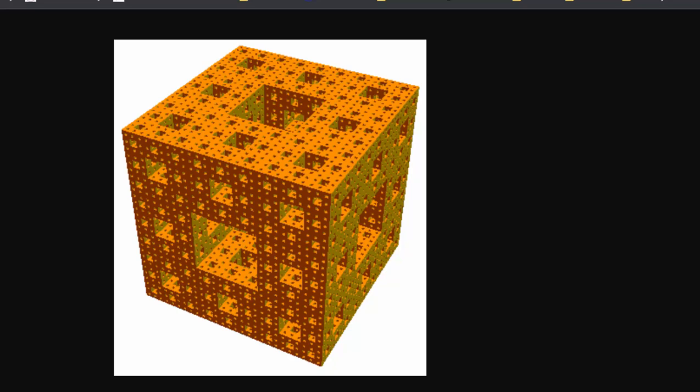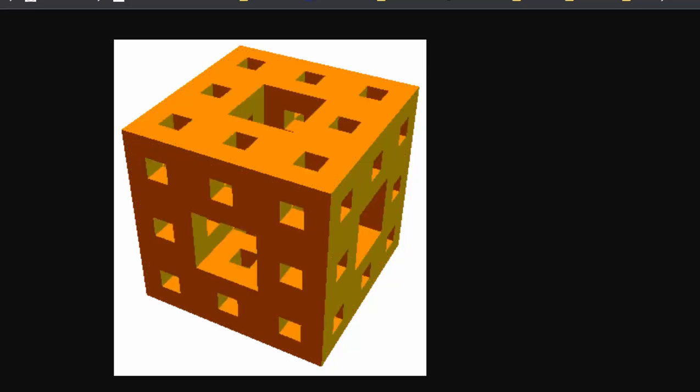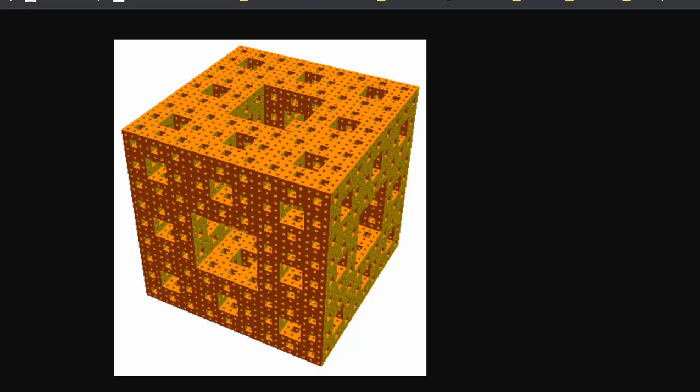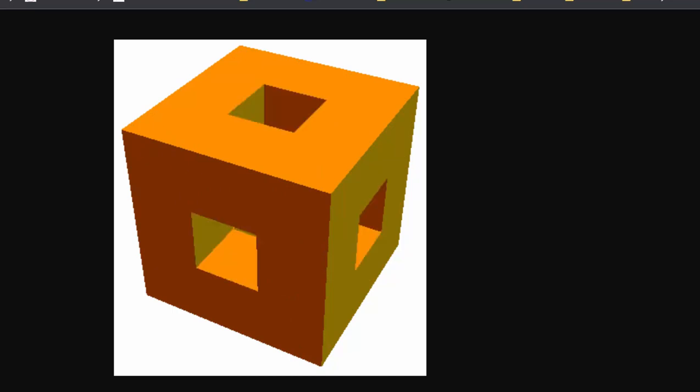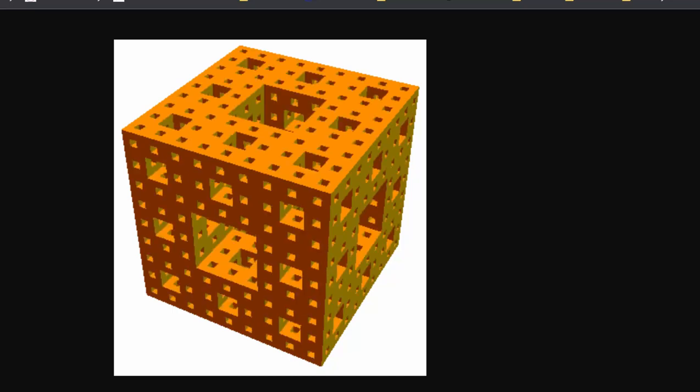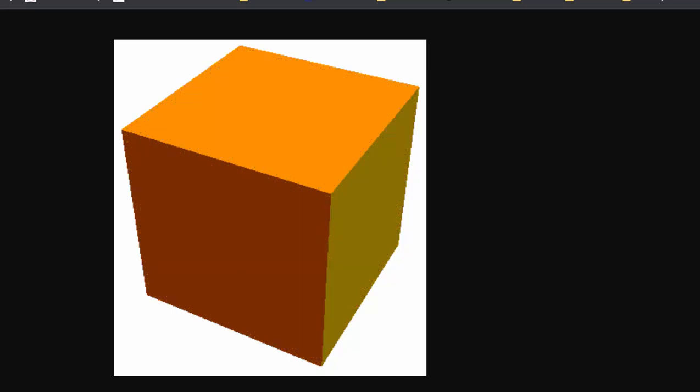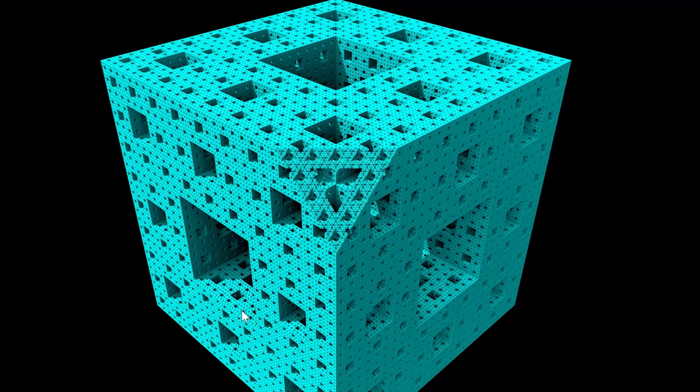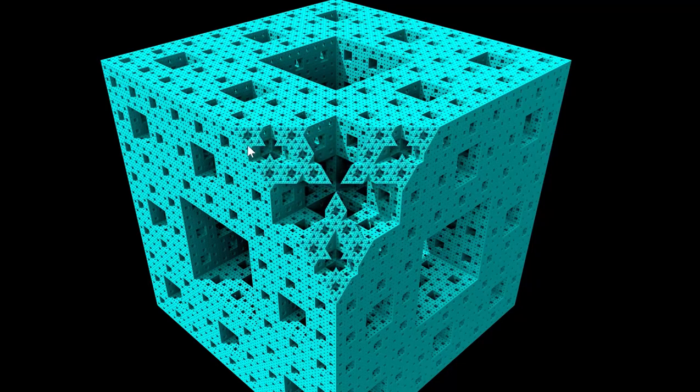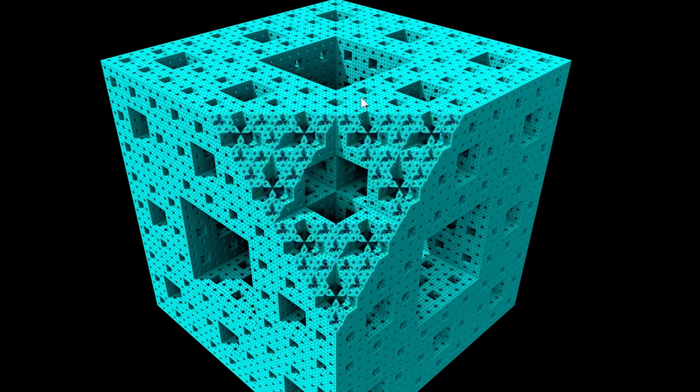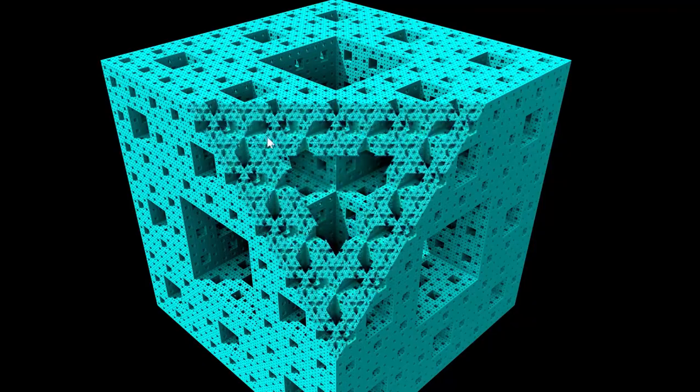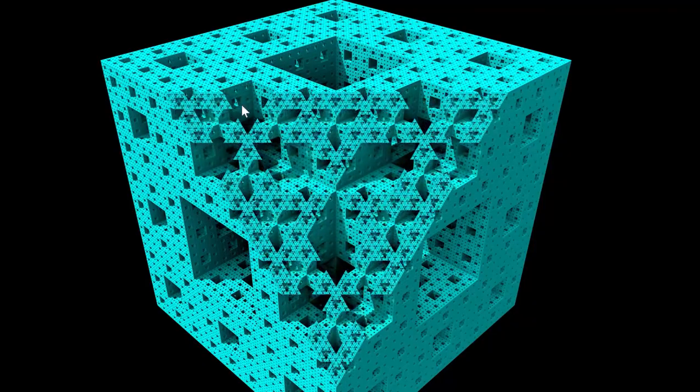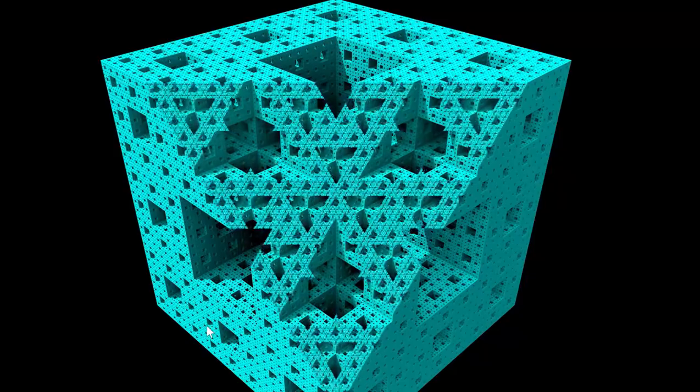Another very interesting animation is if we take a cross-section of this shape once the process has been carried out infinitely many times. What you can see here is that we have the completed Menger sponge, and then you can imagine a sheet is cutting off this upper corner here, and we're able to see what the interior of this actually looks like.